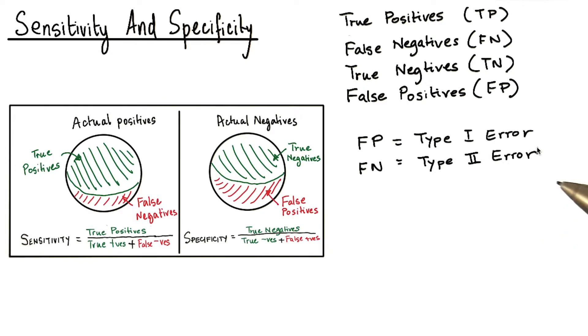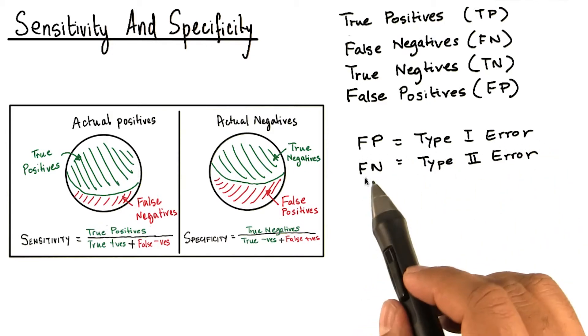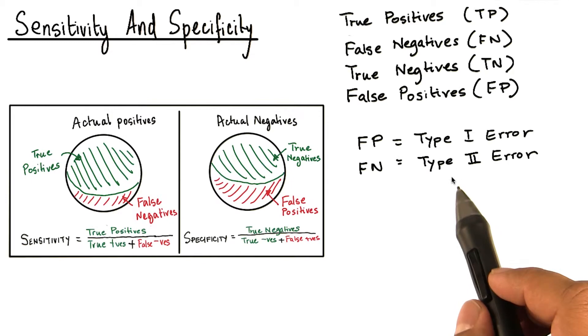Also remember, in the language of hypothesis testing, where events are classified as belonging to a null hypothesis, or an alternate hypothesis, false positives are called type 1 errors and false negatives are called type 2 errors.